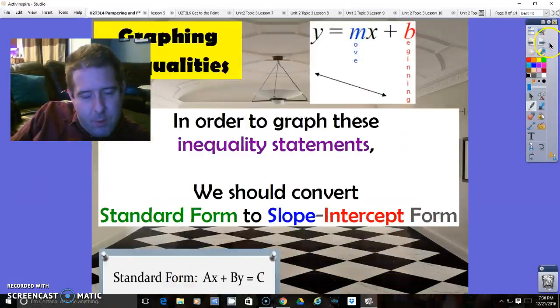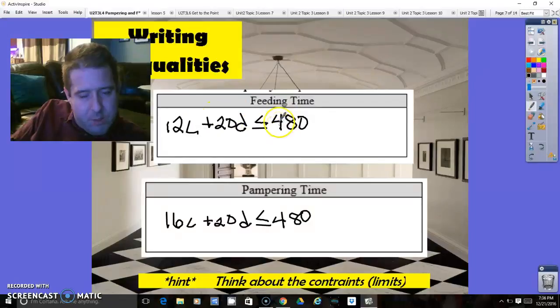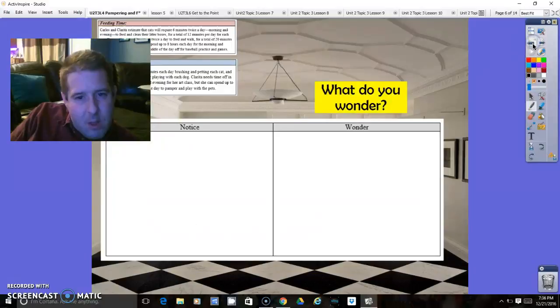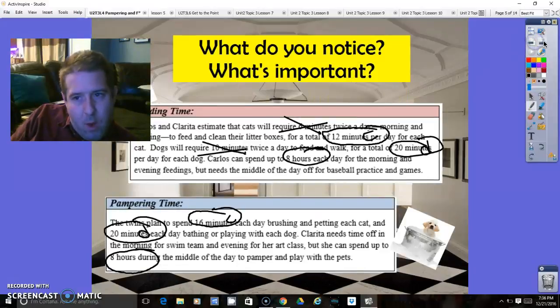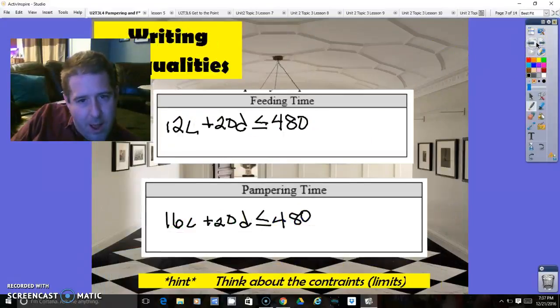And so the next thing we want to do is think about graphing them. What will we do if we want to turn these into slope-intercept form? I'm going to go back and do that right here. So if I want to turn this into slope-intercept form, then I want to solve them for y. So what are we making x and what are we making y? In this case, let's make cats the x and dogs the y.